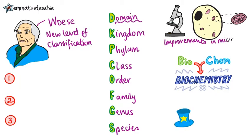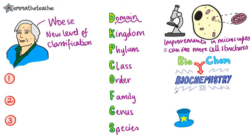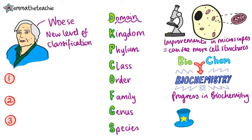He and his team came up with this new classification due to improvements in biology. First of all, microscopes have really improved a lot over the years, and we can now see a lot more detail of the internal structures of cells. Secondly, our understanding of biochemical processes that happen in living things has also really progressed since the 18th century.